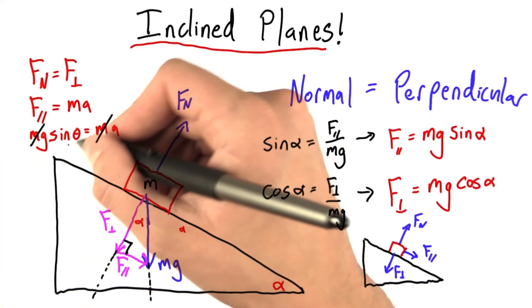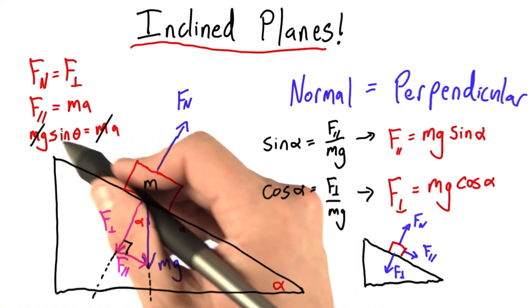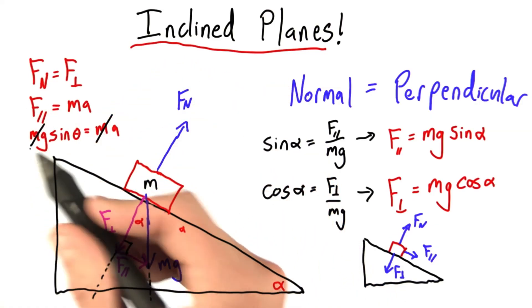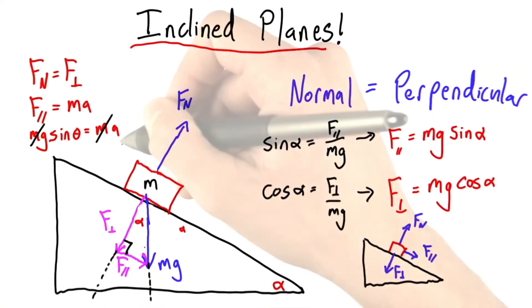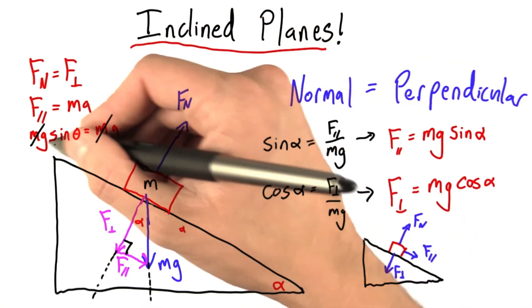Now, that's very amazing. This number, sine of theta, is always between 0 and 1. It's always going to make g smaller. So this is exactly why Galileo chose inclined planes. They slow down acceleration. They make it smaller than g.